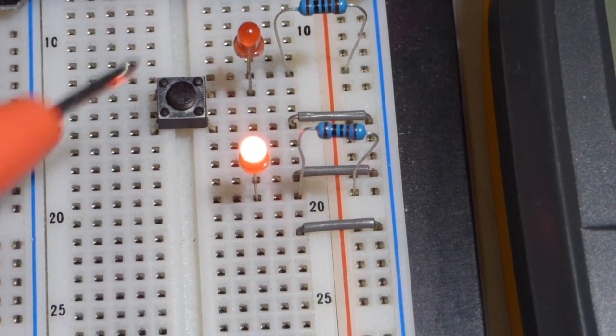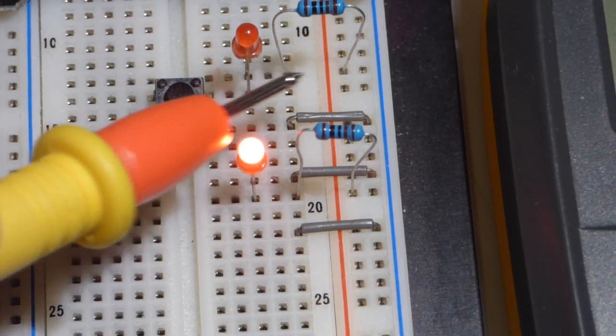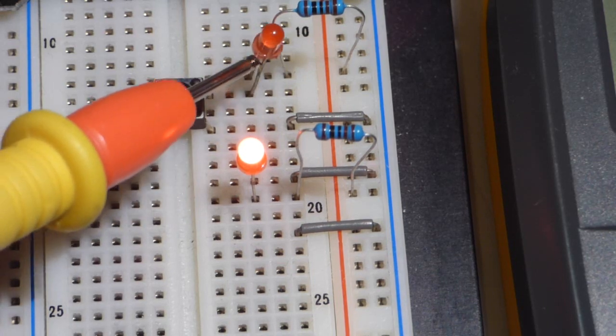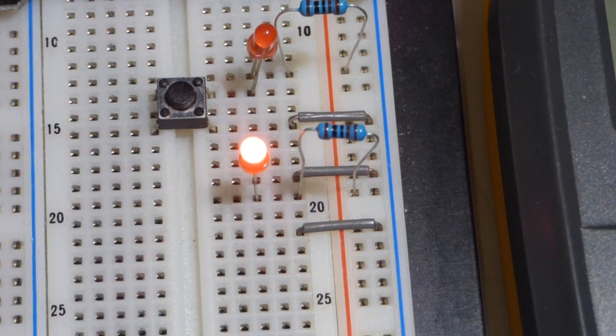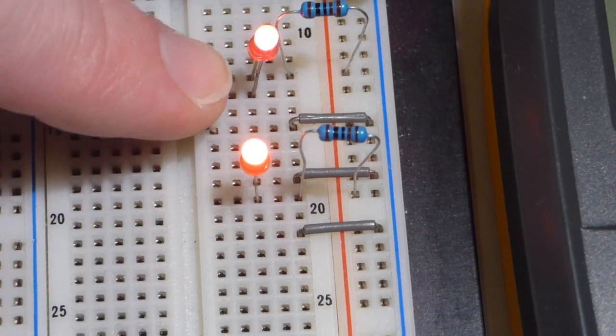Up here, we have the resistor to the positive rail there. The long lead, the anode, is up here. Short lead, cathode. There it comes to the switch. Of course, it is off until we close the switch.